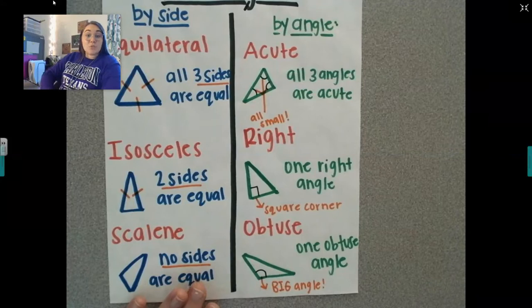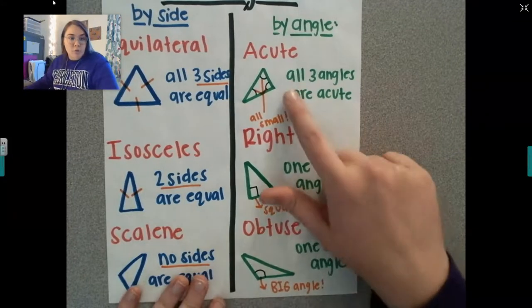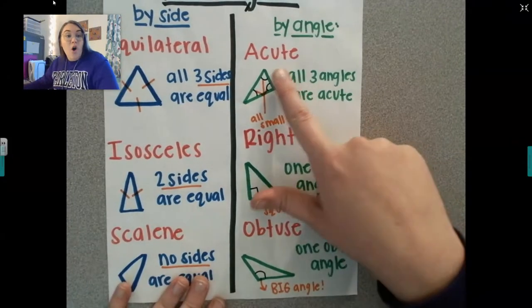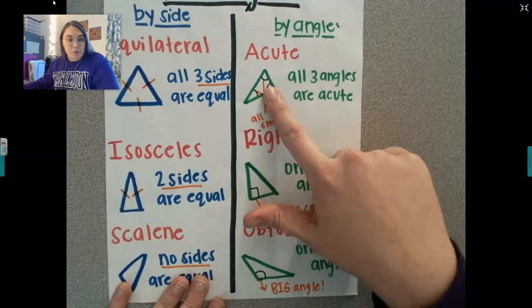An acute triangle has three angles that are acute. So if it's an acute triangle, all three angles are an acute angle.